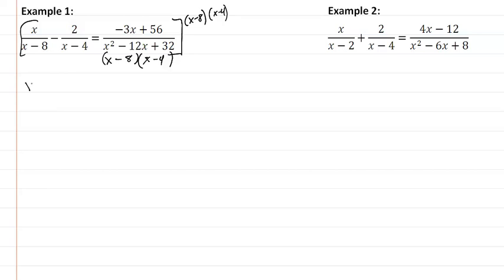So we're going to take x times x minus 4 minus 2 times x minus 8 equal to negative 3x plus 56.